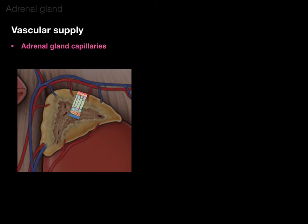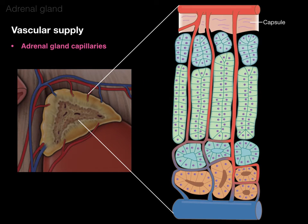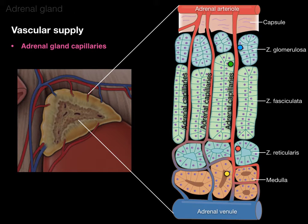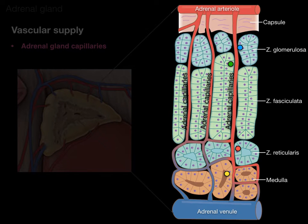Now the capillaries. Taking a section and blowing it up, we see the adrenal suprarenal capsule, then the zona glomerulosa, zona fasciculata, and zona reticularis — making up the adrenal cortex — and then the adrenal medulla. Adrenal arterial blood supply comes in, and adrenal capillaries drain down into the adrenal venule. The zona glomerulosa produces primarily aldosterone, zona fasciculata produces primarily cortisol, reticularis produces androgens, and the medulla produces epinephrine. These hormones are secreted into vessels and flow to their target tissues.